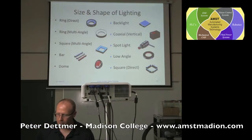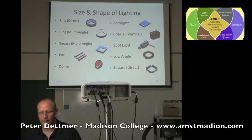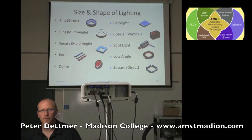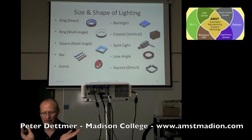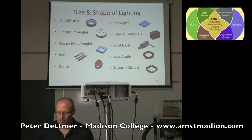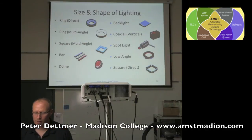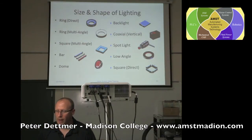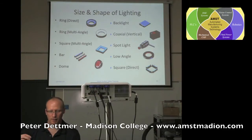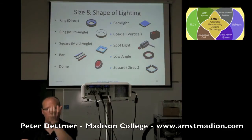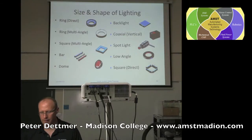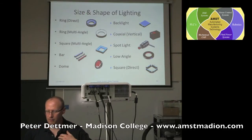Size and shape of lighting also matters. Ring direct lights have multiple lights on a ring that come out at multiple angles. You can also have square lighting, bar lighting, dome lighting, backlighting, coaxial lighting where the light comes from the side and the camera can look through it, spotlight, low angle lighting, and direct lighting.